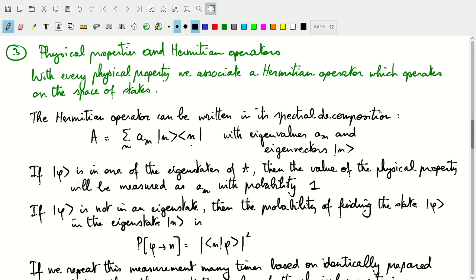This ket n bra n is a projection operator that projects the physical or the quantum state of the system onto the eigenvectors n. And so, we can decompose our Hermitian operator into a sum of these projection operators multiplied with the eigenvalues.